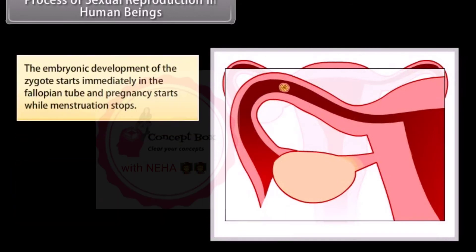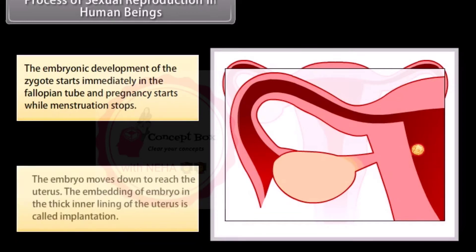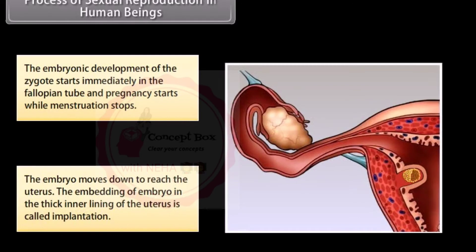The embryonic development of the zygote starts immediately in the fallopian tube, and pregnancy starts while menstruation stops. The embryo moves down to reach the uterus, and the embedding of the embryo in the thick inner lining of the uterus is called implantation.